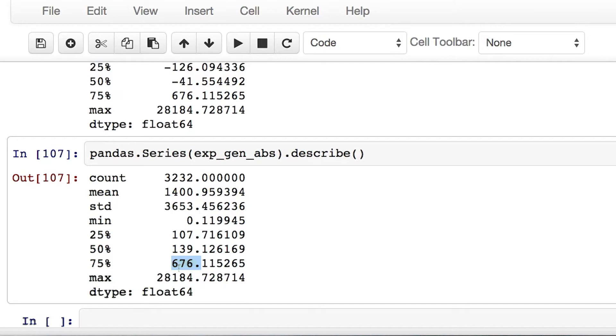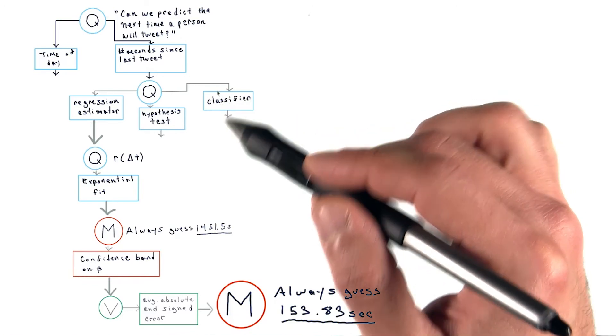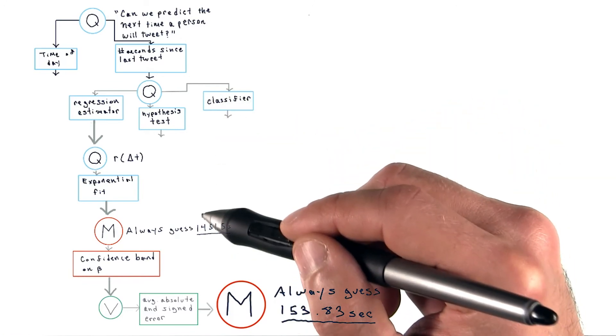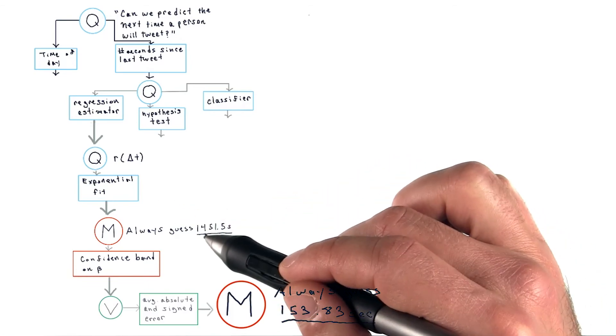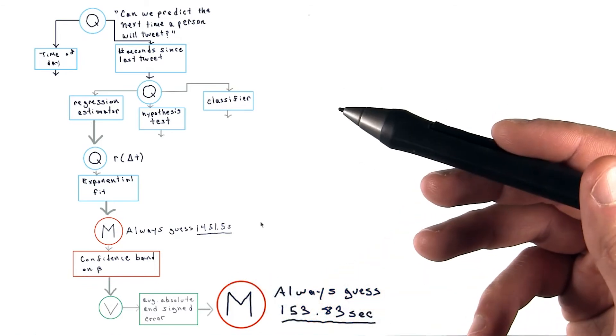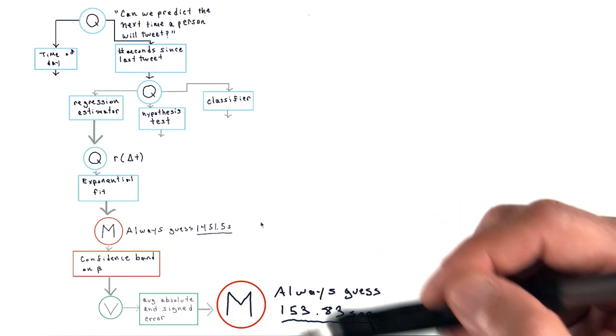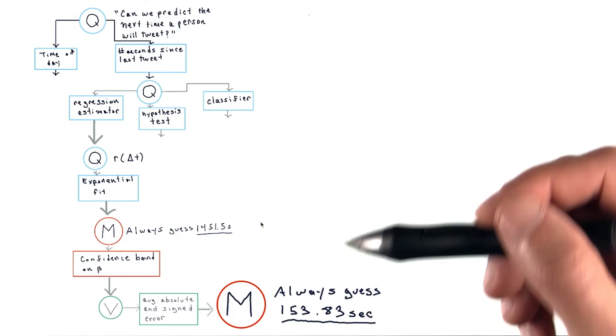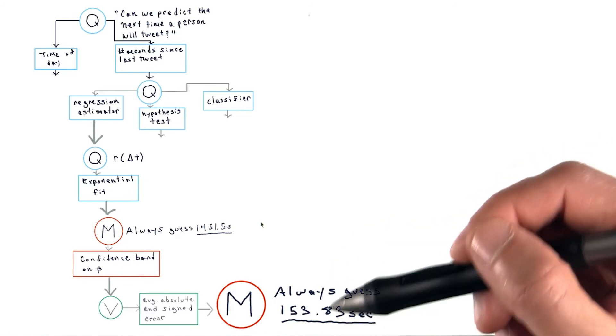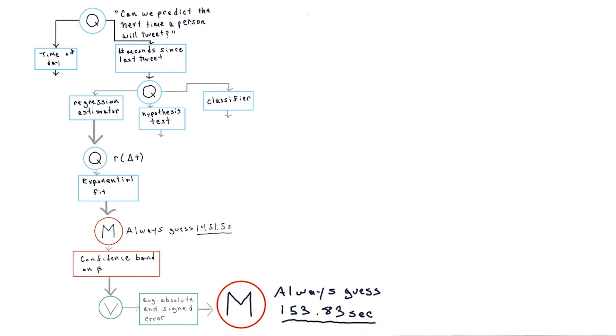So before we proceed, let's just summarize where we are. We decided to build a regression estimator to estimate the number of seconds since the last tweet. We decided to model this regression estimator using an exponential fit. Our initial fit suggested always guessing 1,451 and a half seconds. After forming some confidence bands on this value of beta and taking a look at the absolute and signed error, we decided we want to take a step back and look at a slightly more generalized version of that model with a greater number of parameters. After fitting the new generalized model, we came to a new guess of 153.83 seconds and discovered that it performed a bit better than the initial fit.